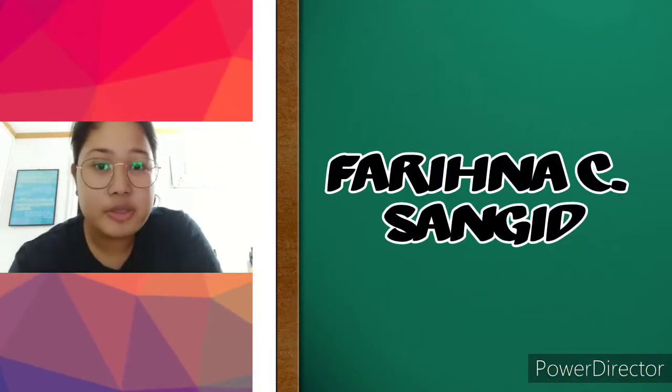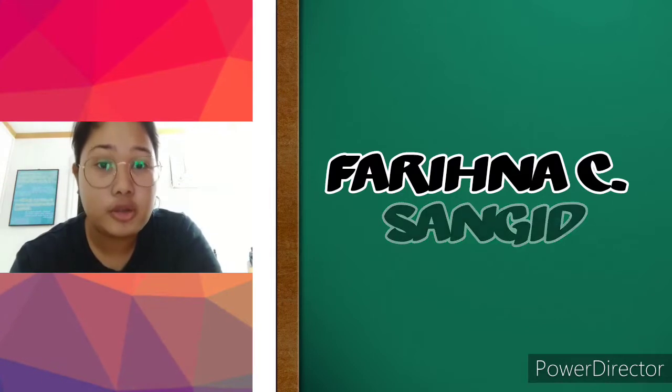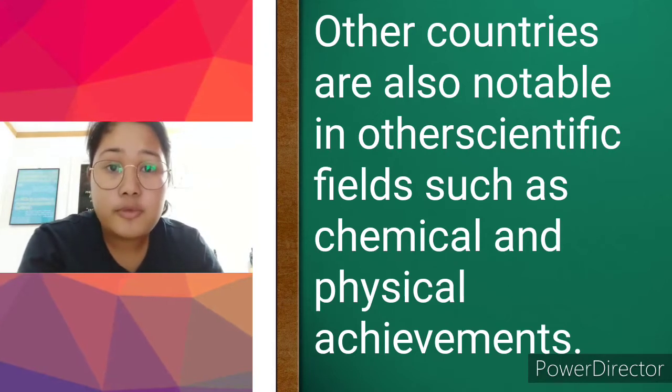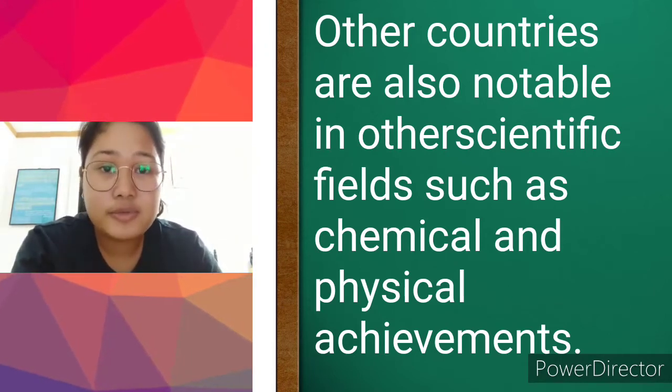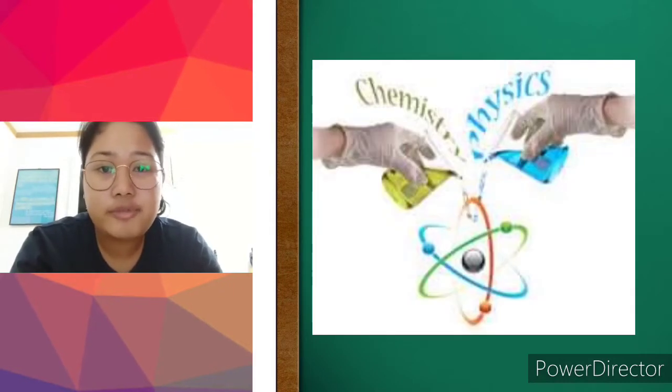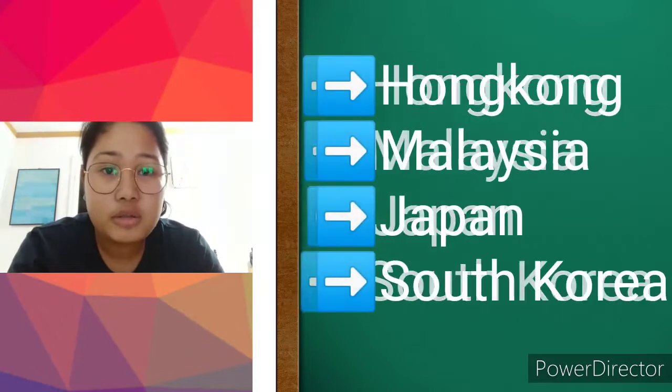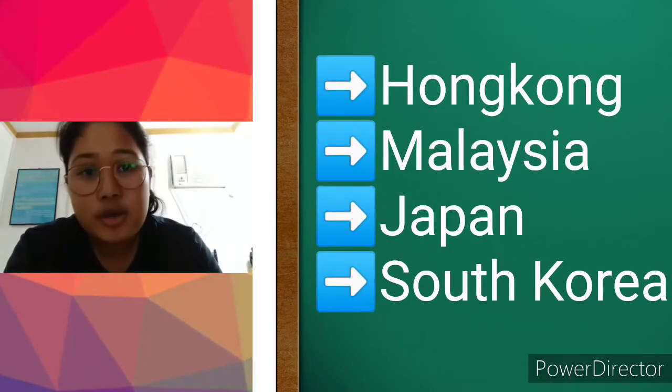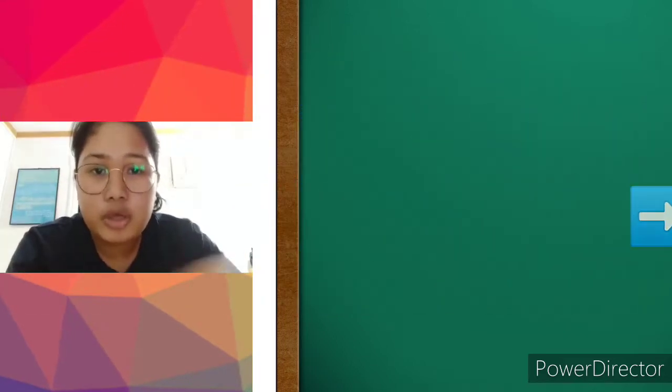As we know, Japan's achievements are particularly known for their electronic and automobile products. But there are also other Asian countries that are notable in different scientific fields, such as chemical and physics achievements. Actually, there was a study that found out that Asian chemistry achievements are actually higher than the world's achievements. Some of these countries that are known for chemical and physics achievements are Hong Kong, Malaysia, Japan, and South Korea.